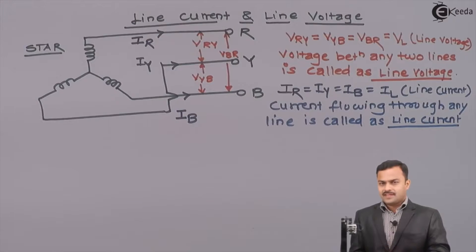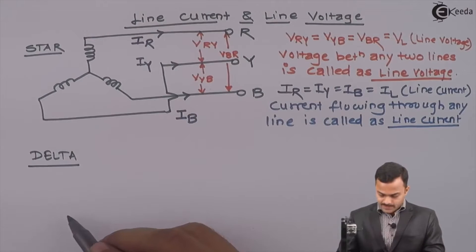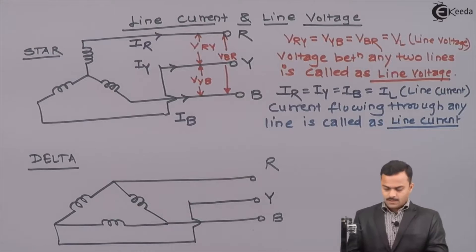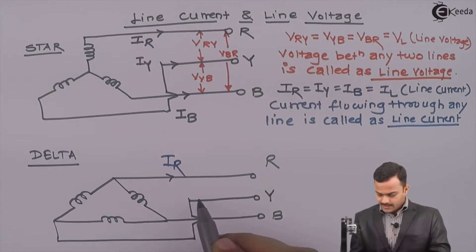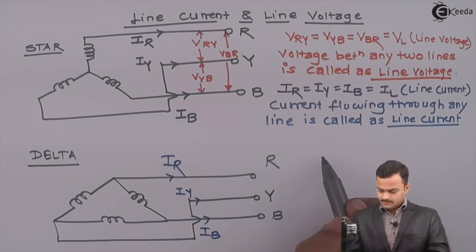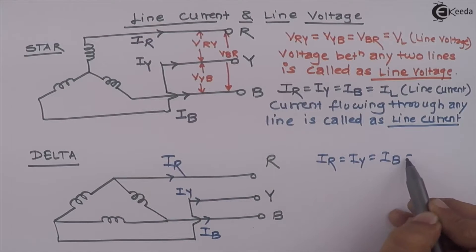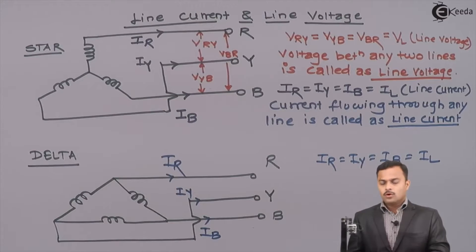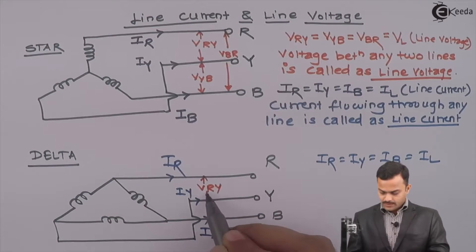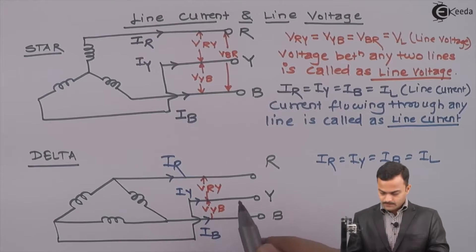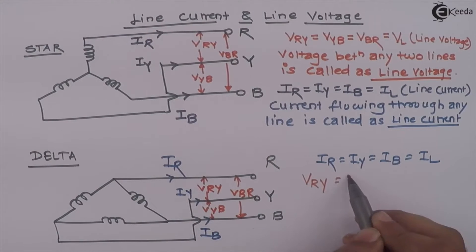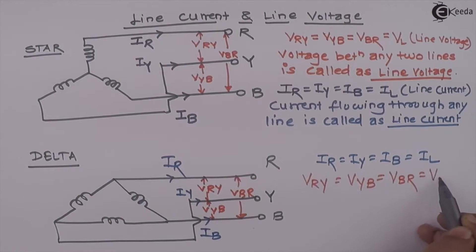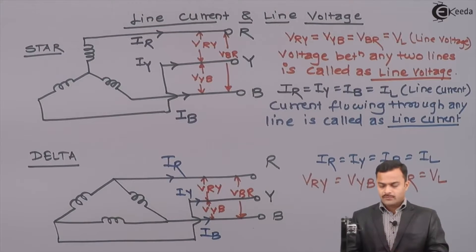Now let's discuss the same thing with delta supply. Current carried by the R line is IR, by the Y line is IY, and by the B line is IB — nothing but line current. So IR equals IY equals IB equals IL. In this case also, voltage between any two lines — VRY, VYB, and VBR — is the line voltage.